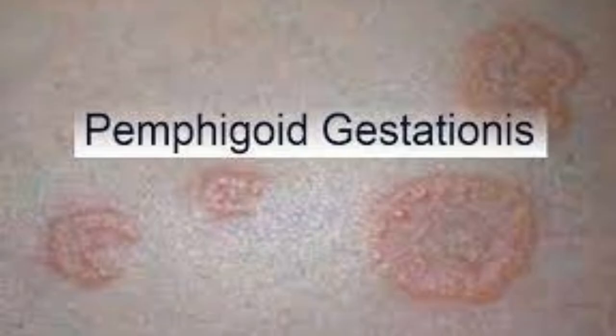Pemphigoid gestationis is a vesiculobullous disease that is usually seen in the last trimester of pregnancy, although it can be seen in the second trimester or may develop postpartum. Sometimes it is associated with hydatidiform moles.